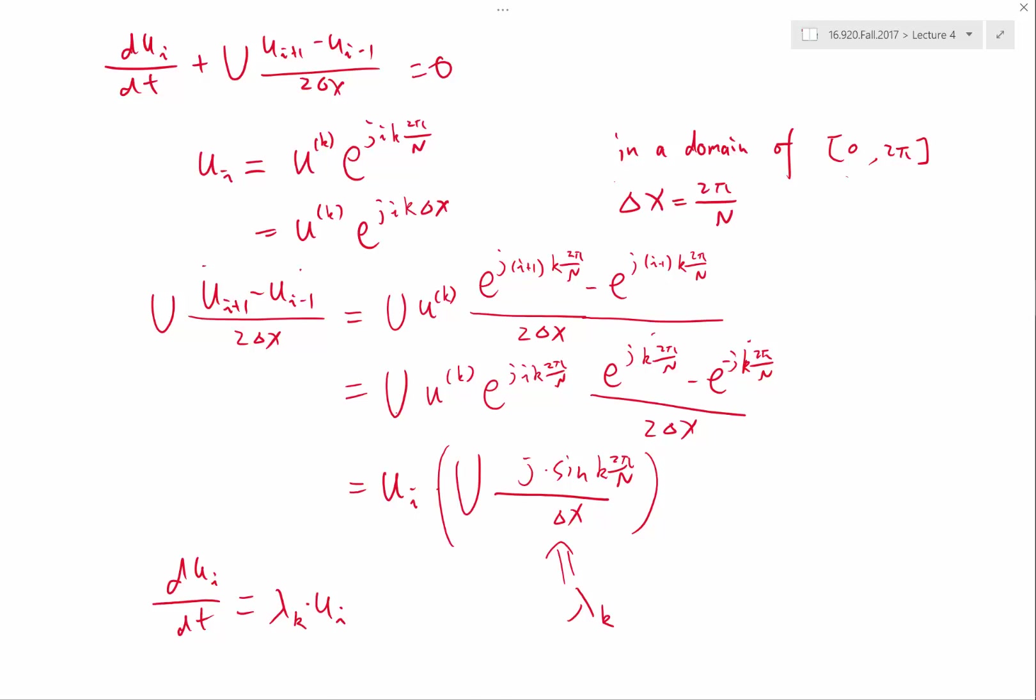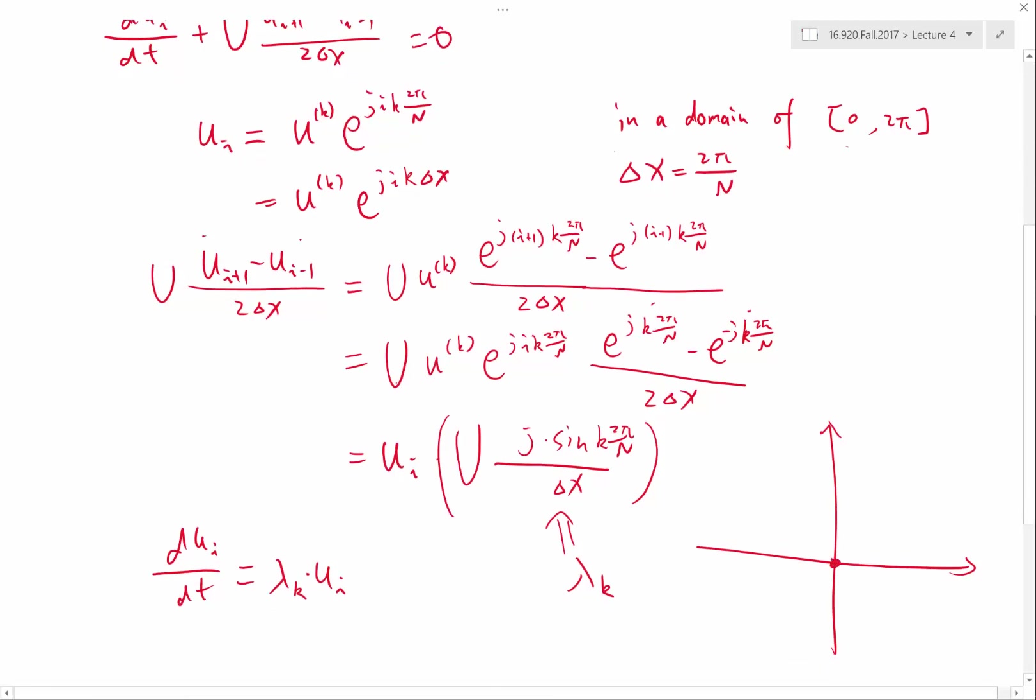It's positive and imaginary, right? So if you draw the imaginary plane, this would lie... So k equal to 0 is still 0. But for positive case, it'll be here. For negative case, it'll be here. And sine never goes above plus minus 1. So this case never goes above U divided by delta x. And here would be minus U divided by delta x. So it'll stay on this range.